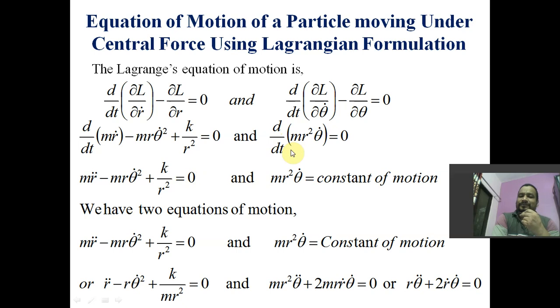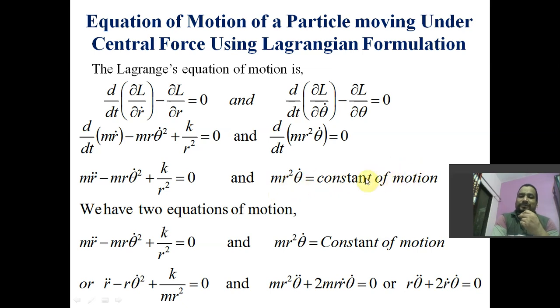For the theta coordinate, del L by del theta-dot is m r squared theta-dot, so the equation becomes d by dt of m r squared theta-dot equal to 0. This means m r squared theta-dot is a constant of motion — this is the angular momentum, which is constant during the motion.